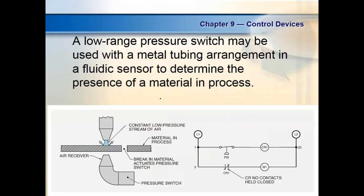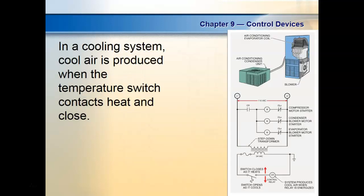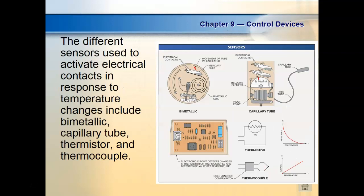This is a pressure switch — the symbol is similar to a float switch but it has a curved diaphragm shape. We also have temperature switches — a temp switch symbol is similar. When you take the sensors class, we'll look at the different types in detail. These level switches are not switches — they're analog devices. A switch is what we call a digital or binary device.